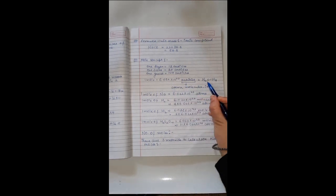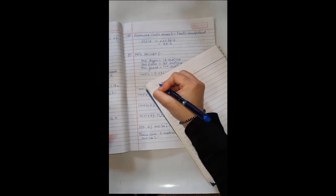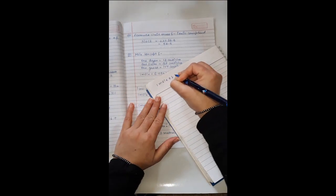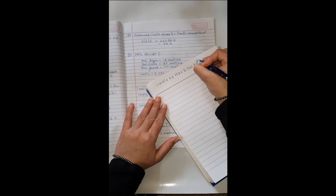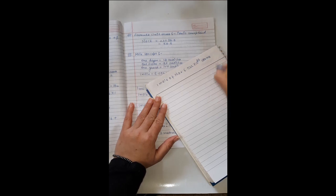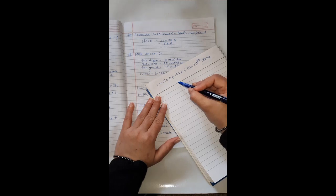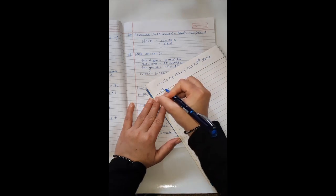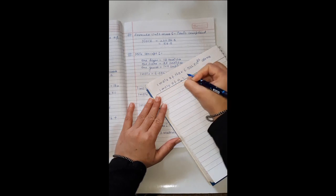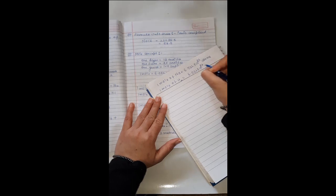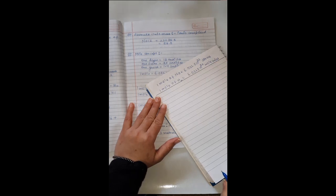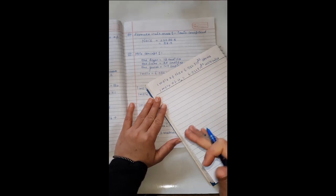This number is known as Avogadro's number. Now, one mole of sodium will be equal to 6.022 × 10²³ atoms of sodium. Why atoms? Because sodium exists in atomic form. If I write 1 mole of hydrogen, then it will be equal to 6.022 × 10²³ molecules of hydrogen. Why molecules? Because hydrogen exists in a molecular form.